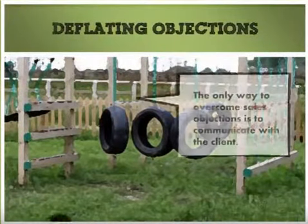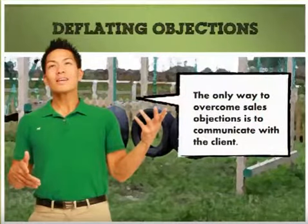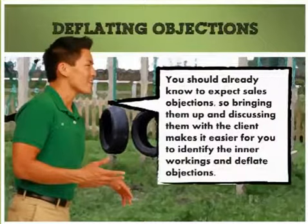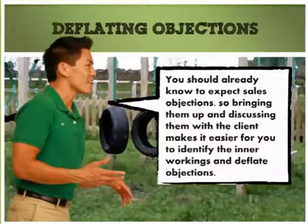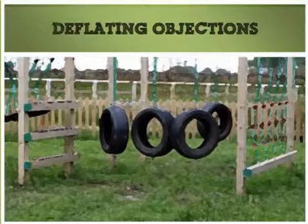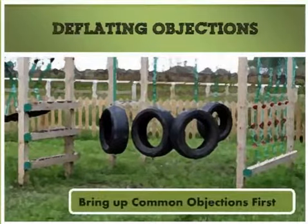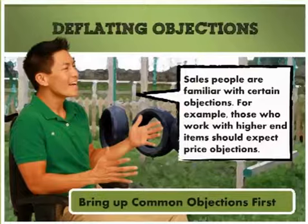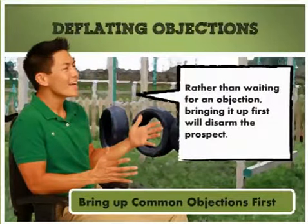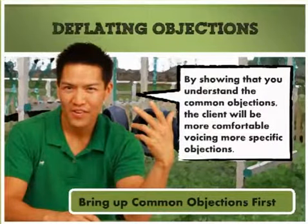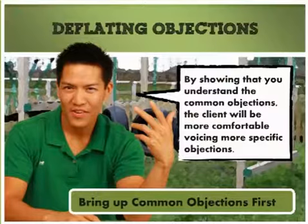Deflating objections: the only way to overcome sales objections is to communicate with the client. You should already know to expect sales objections, so bringing them up and discussing them with the client makes it easier to identify the inner workings and deflate objections. Bring up common objections first — salespeople are familiar with certain objections. Rather than waiting for an objection, bringing it up first will disarm the prospect. By showing that you understand the common objections, the client will be more comfortable voicing more specific objections.